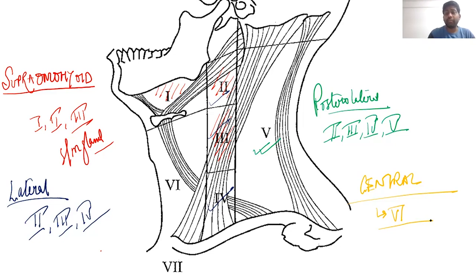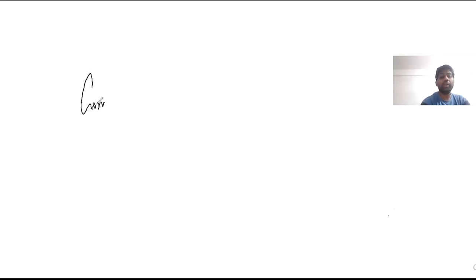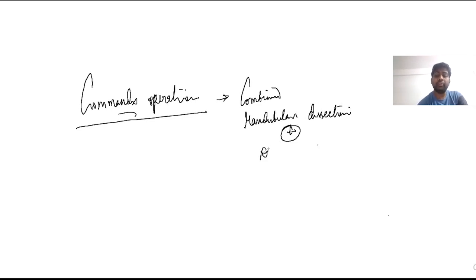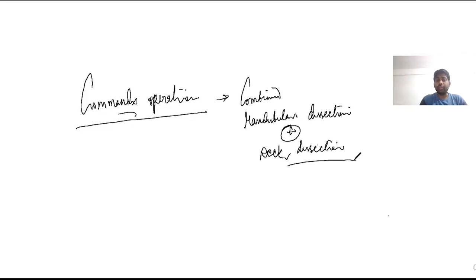The lymph node dissection type may also be changed intraoperatively depending on findings. To recap the three types: radical neck dissection, modified radical neck dissection (with three subtypes), and selective neck dissection (with its subtypes). Apart from these, there is another type commonly encountered: the commando operation. This is done mainly for mandibular cancer or buccal mucosa cancers — it is a combined mandibular dissection with neck dissection, and it is a commonly asked question in exams.